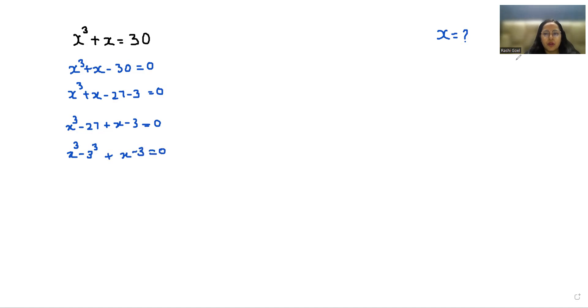Now here I am going to use a very famous identity: a³ - b³ = (a - b)(a² + ab + b²). So (x - 3)(x² + 3x + 9) + (x - 3) = 0.